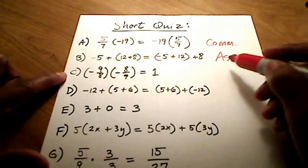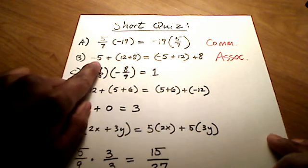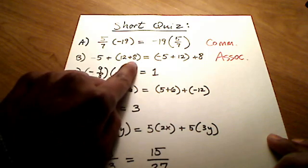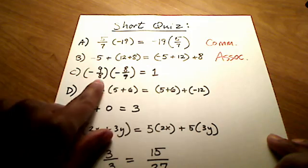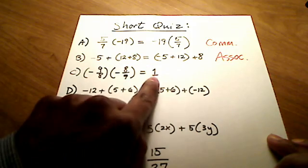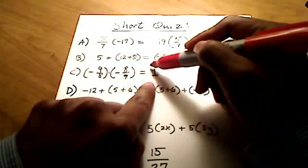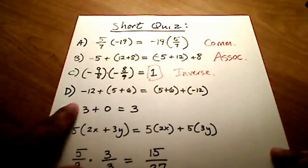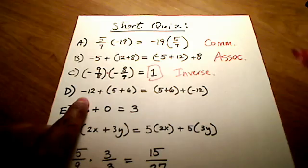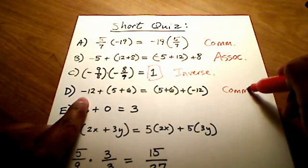That's the associative property because, look, the order of the numbers didn't change. Negative 5, 12, 8. Negative 5, 12, 8. Okay, this one here is definitely the inverse property because we were multiplying these two things, and look, we ended up with a 1. So this one here is the inverse property. This D here is the commutative property again.